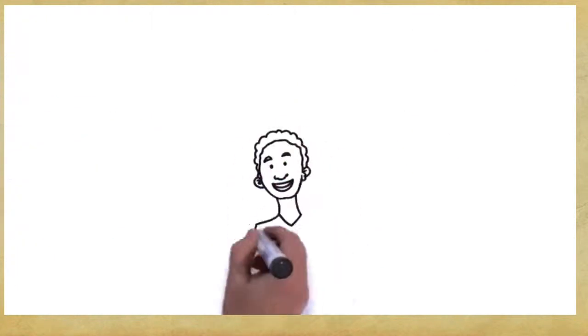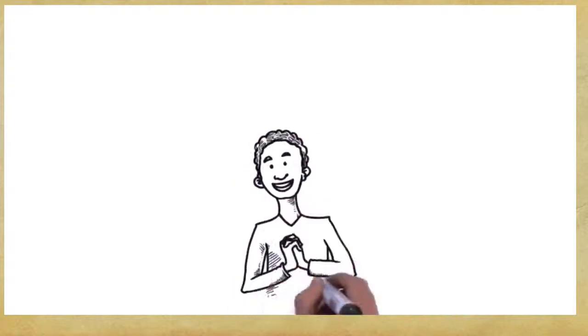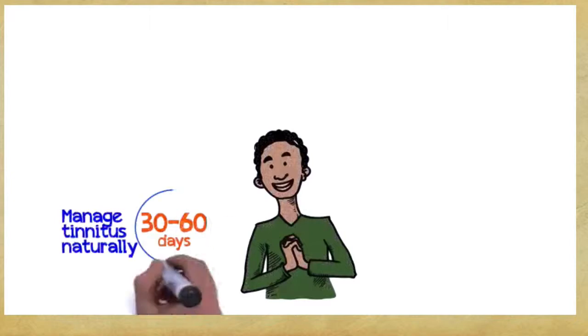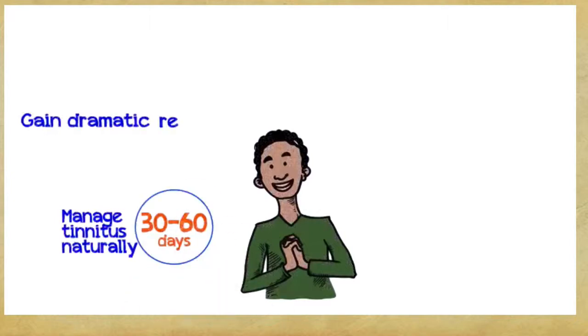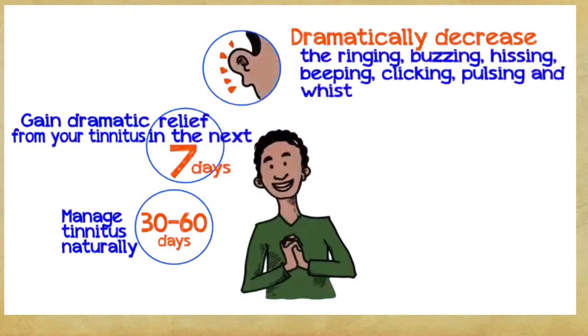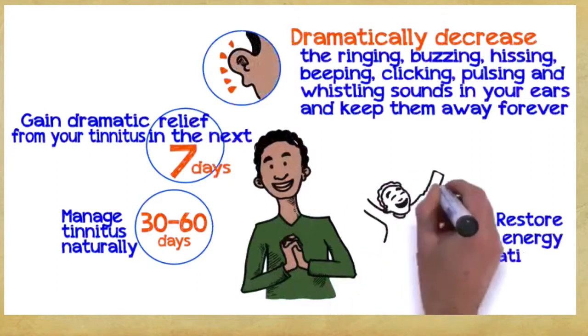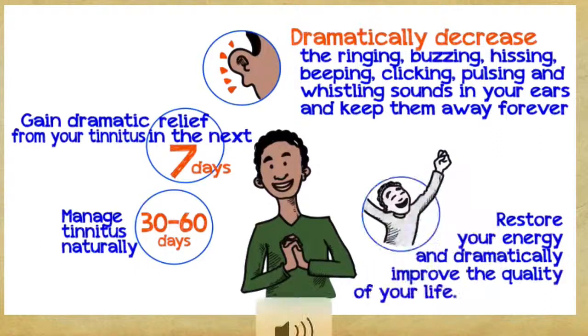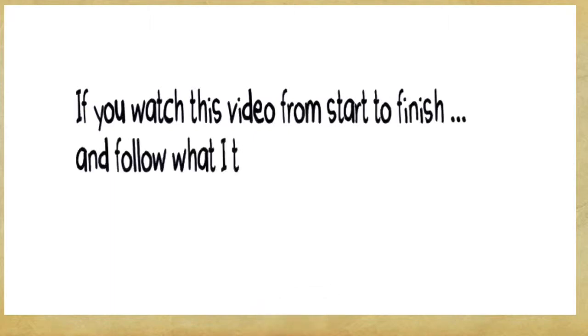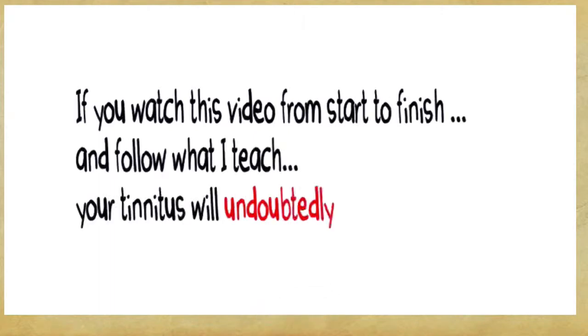So what can you gain if you embrace these three easy principles? Well, you can manage tinnitus naturally within 30 to 60 days, gain dramatic relief from your tinnitus within the next seven days, dramatically decrease the ringing, buzzing, hissing, beeping, clicking, pulsing, and whistling sounds in your ears and keep them away forever, restore your energy and dramatically improve the quality of your life, guaranteed. Let me reiterate, if you watch this video from start to finish and follow what I teach, your tinnitus will undoubtedly start to fade away.